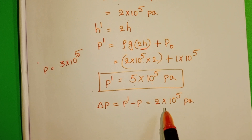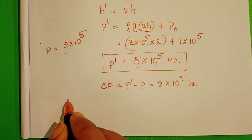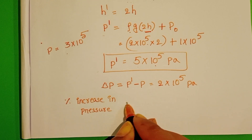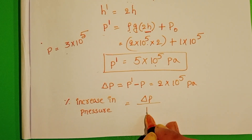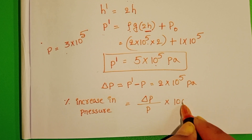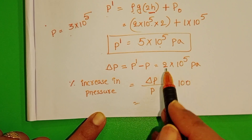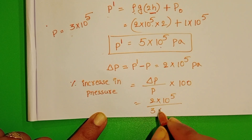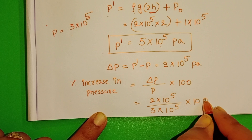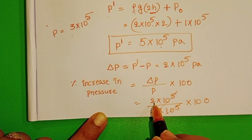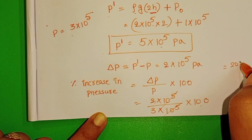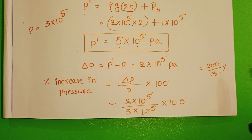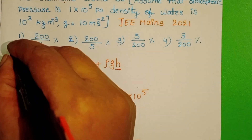The percentage increase in pressure equals change in pressure divided by initial pressure, multiplied by 100. That is 2 × 10⁵ divided by 3 × 10⁵ × 100%. The 10⁵ cancels, giving 200/3%. The increase in pressure of the submarine is 200/3%, and the 1st option is correct.